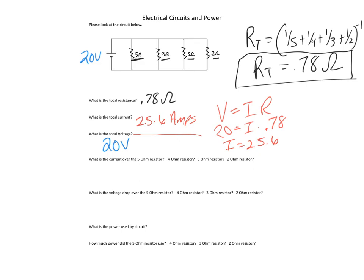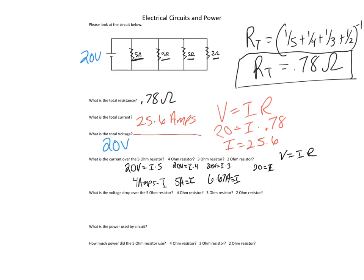What is the current over each resistor? In a series circuit the current was all the same, but in a parallel circuit we have to do V equals IR for each one. Each resistor gets the full 20 volts. For the 5-ohm: 20 divided by 5 equals 4 amps. For the 4-ohm: 20 divided by 4 equals 5 amps. For the 3-ohm: 20 divided by 3 equals 6.67 amps. For the 2-ohm: 20 divided by 2 equals 10 amps.